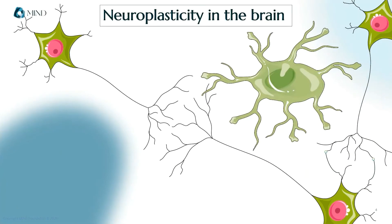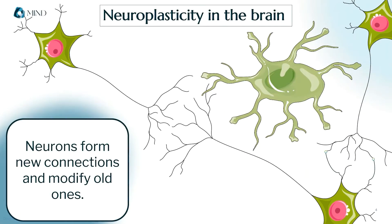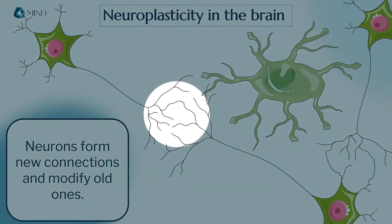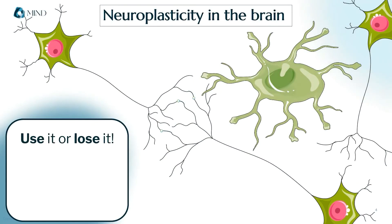In the brain, plasticity manifests itself in different ways. Neurons can form new connections with each other, and also strengthen or weaken old ones — and your brain does this constantly. Neurons can change their physical shape to connect to other cells, or to delete connections that haven't been activated in a while. This is the biological version of use it or lose it.